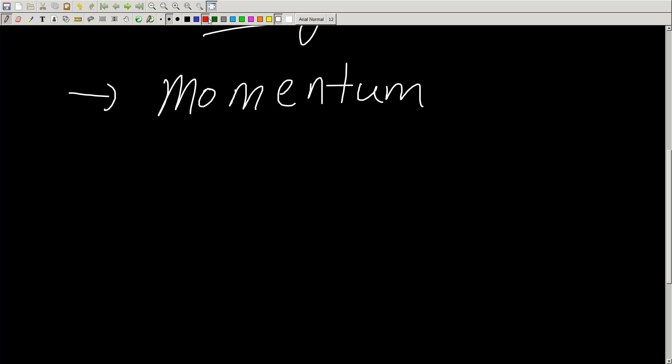So the formula goes as such: P, and P is a vector by the way, equals mass times velocity V. So P, guys, P is the momentum vector.